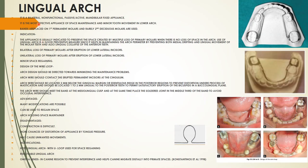The lingual arch is a bilateral, non-functional, passive or active, mandibular fixed appliance. Unlike the band and loop which can be used in both arches, the lingual arch is used only in the mandible. It is the most effective appliance for space maintenance and can also allow minor tooth movement in the lower arch. Bands are placed on the first permanent molars, rarely on deciduous molars.